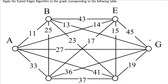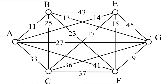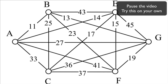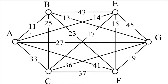Go ahead and pause the video and try the sorted edges algorithm on this graph yourself. Our smallest edge is 11, nothing smaller — that's our connection from A to B. After 11, the smallest connection is 13 from B down to G.